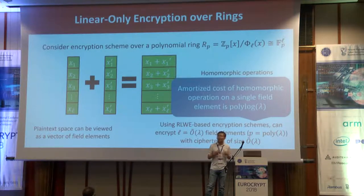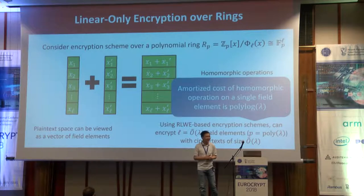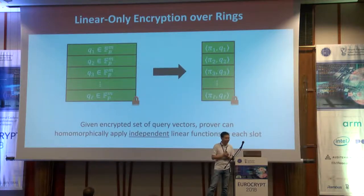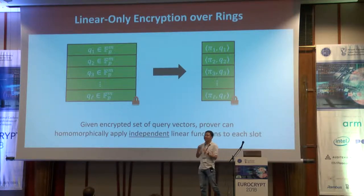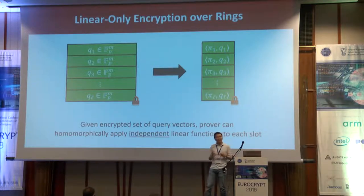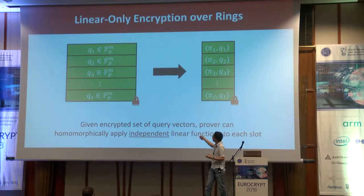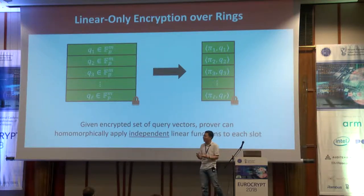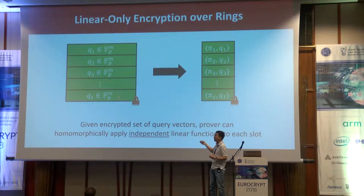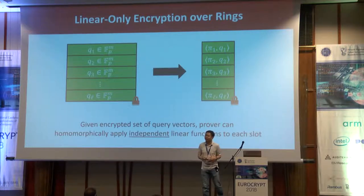This is what allows us to achieve polylogarithmic overhead when it comes to the prover complexity. When a verifier encrypts its queries, it can now encrypt an entire vector of queries within each ciphertext. The prover can then apply a different linear function to each of these queries. So we've departed from the traditional linear PCP model where the prover applies a consistent linear function to all queries — now it can operate on all slots independently. This reduces the amortized complexity of homomorphic operations, but gives the prover more power: it can evaluate inconsistent linear functions in each slot.